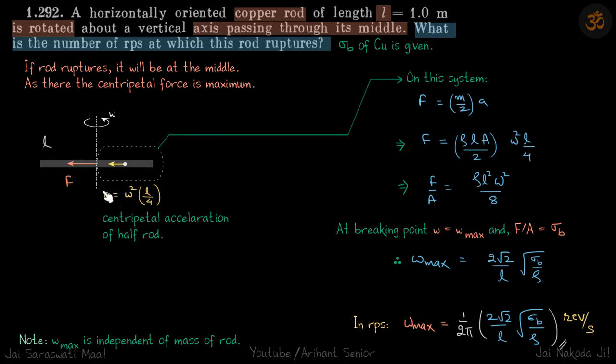So this is the rod which is rotating about this axis with omega. So at what point will the rod rupture? That's the first question.